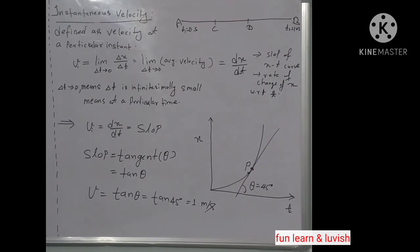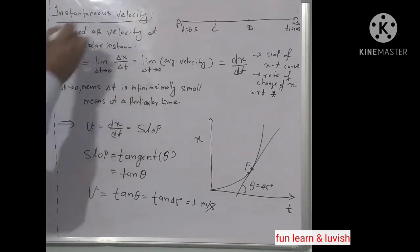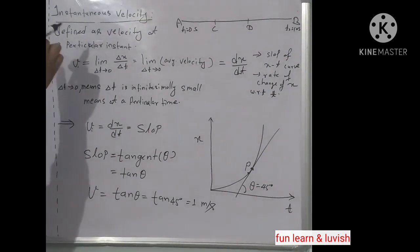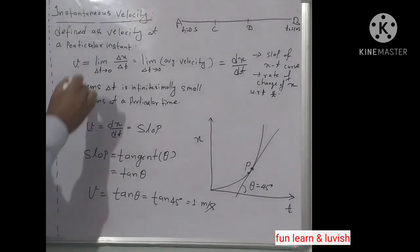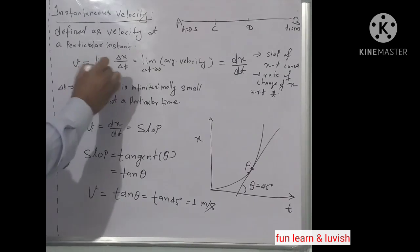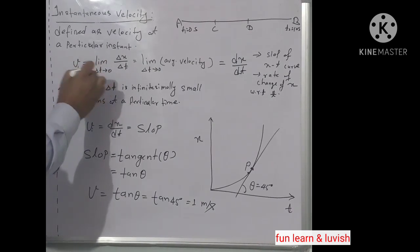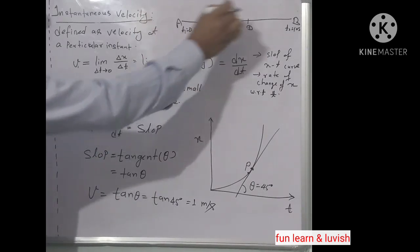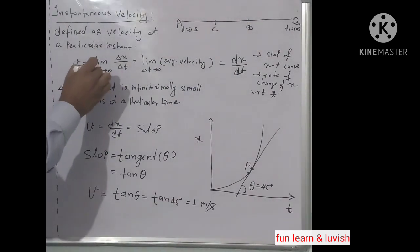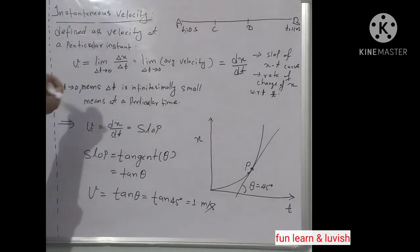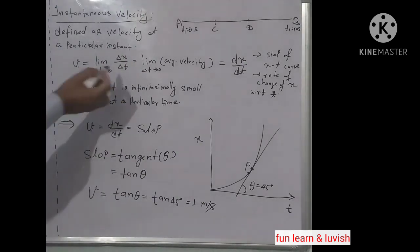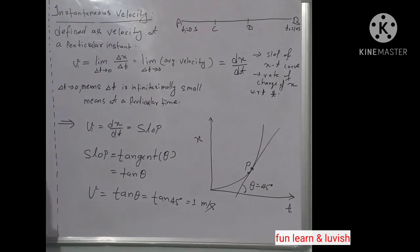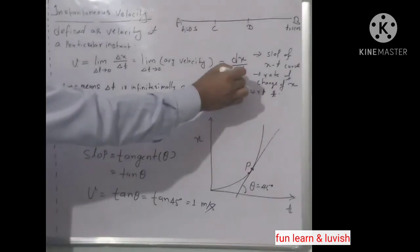Now we will study instantaneous velocity. What is instantaneous velocity? It is the velocity at a particular instant. Instantaneous velocity is defined as the limit as Δt tends to 0 of Δx upon Δt. Here Δt is the time traversed from point A to point B, but if this time tends to 0 it means we are at a particular point. So instantaneous velocity is defined as dx upon dt.